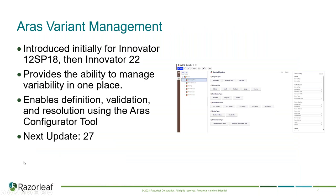First, we have variant management. This was initially introduced for Innovator 12 SP18 and then introduced to the 14-plus platform with Innovator 22. The goal of variant management is to provide the ability to manage variability in one place — using variant management tools for definition, validation, and resolution of configurations using the configurator tool. As you make selections, it shows compatible options or eliminates options based on your selections. The next update for variant management should be in Innovator 27, so we'll have more in-depth coverage then.